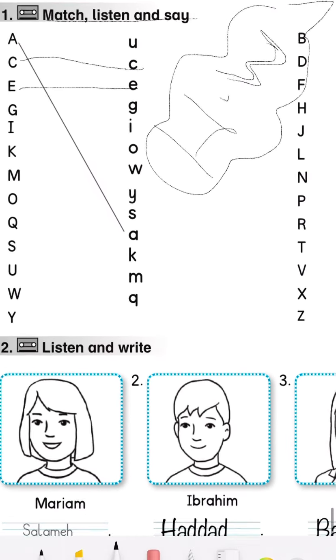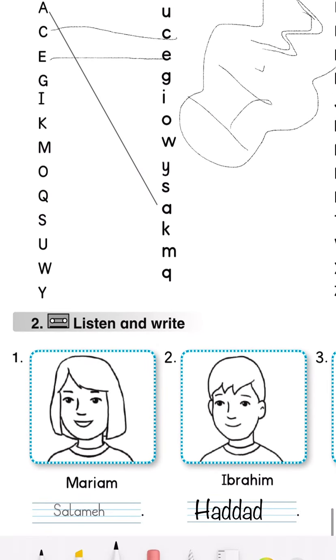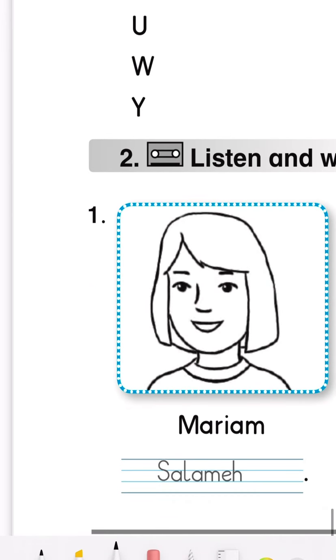The first one is answered. Mariam Salameh. Her surname is Salameh. It's a girl, we're going to say her. Salameh: S-A-L-A-M-E-H.